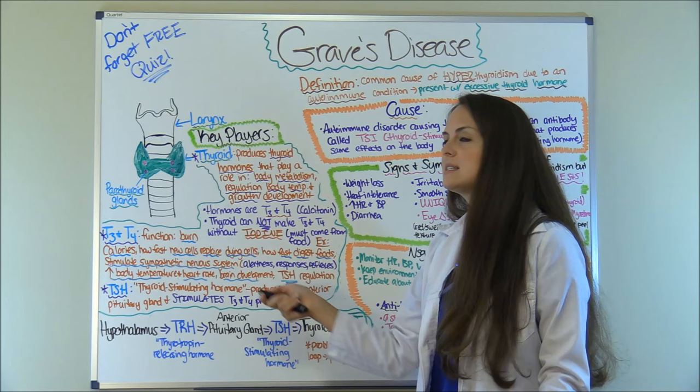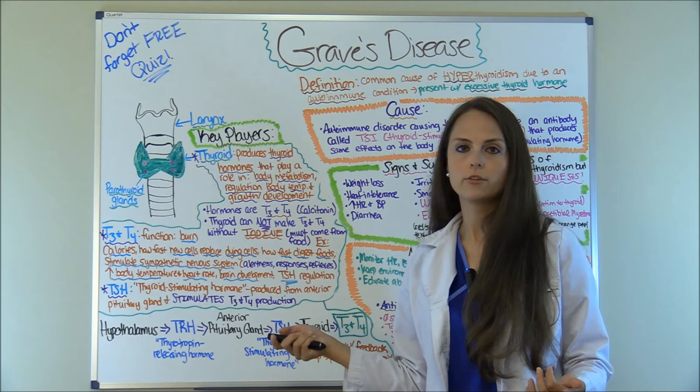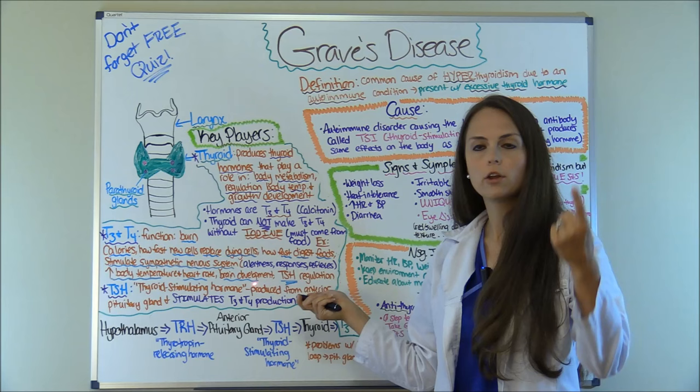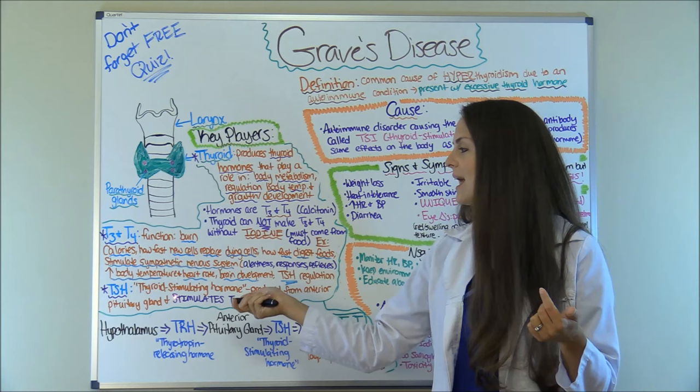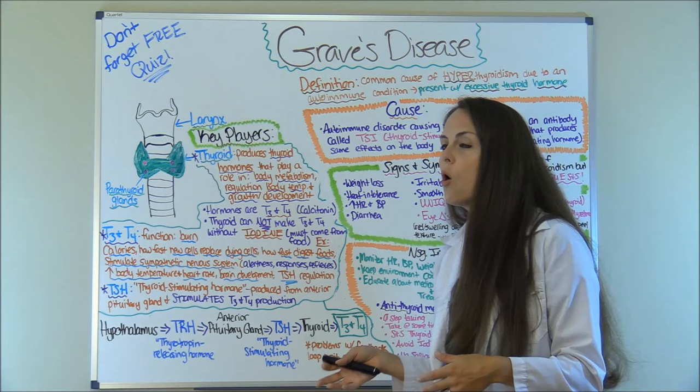Now what does T3 and T4 do, and why does it cause so many problems on our body when we have too much of it? Normally it helps us burn calories, determines how fast new cells replace dying cells, how fast we digest our food, stimulates our sympathetic nervous system — which is responsible for alertness, responses, and reflexes — increases body temperature, heart rate, and blood pressure, helps in brain development especially in children, and regulates TSH.